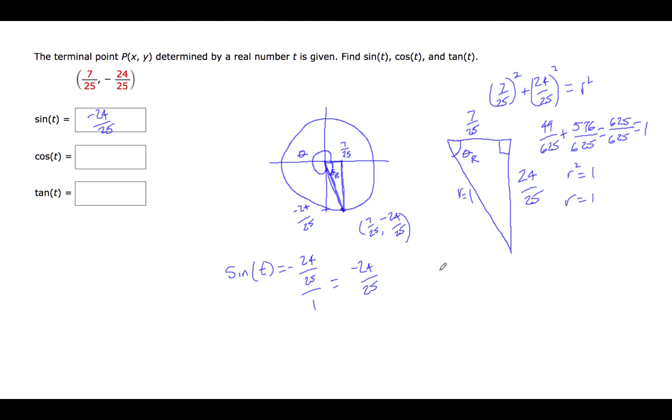The cosine of t will be adjacent over hypotenuse. We could also call it x over r. So 7 over 25 over 1. The cosine is positive in the fourth quadrant, so it's just going to be 7 over 25.